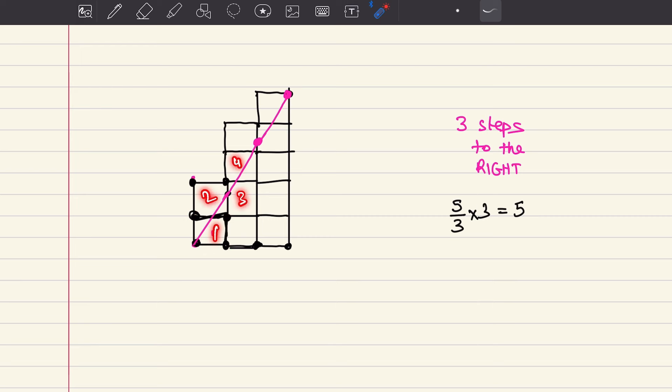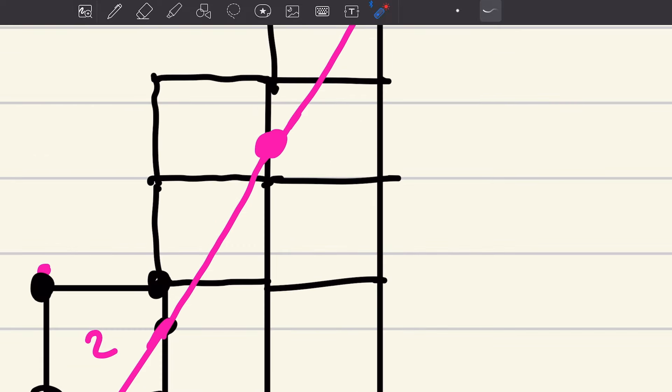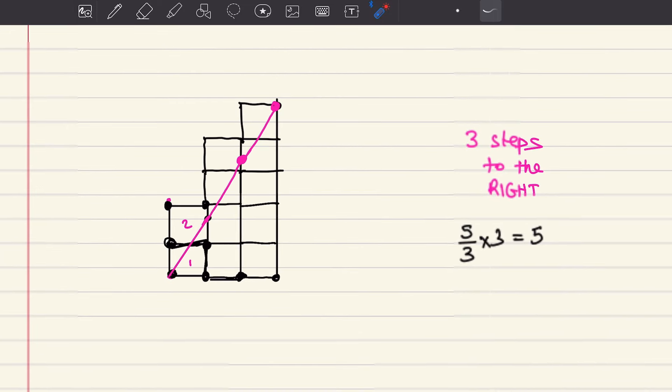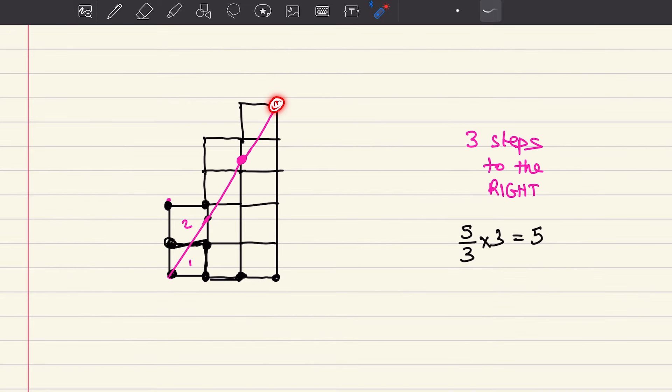Now let's count the number of squares that Rodrigo has covered. 1, 2, 3, 4, 5, 6 and 7. Don't forget this little box. Once he reaches this corner, this pattern will actually continue. So every time he takes three steps to the right, Rodrigo cuts through seven boxes.